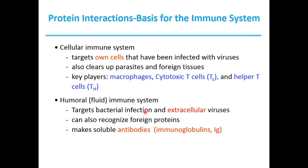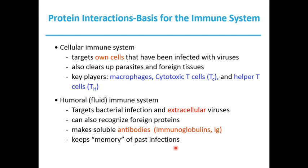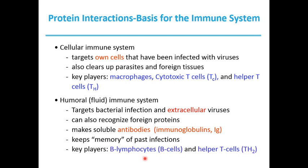One of the major functions of the humoral immune system is to make soluble antibodies, or immunoglobulins, abbreviated Ig. In addition, it keeps memory of past infections. Key players in the humoral immune system involve B lymphocytes, or B cells, and helper T cells, or Th2.